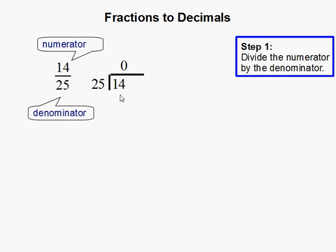25 cannot go into 14 so put a 0 right here. We got to move over into the decimal place and 25 can go into 140 5 times. 5 times 25 is 125 and then we subtract. We get 15.